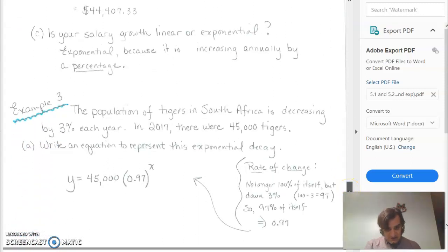Same thing here. This is decreasing by 3%. So we have the original 100% minus 3%, which is 97% of the original, or 0.97 if we write it as a decimal.